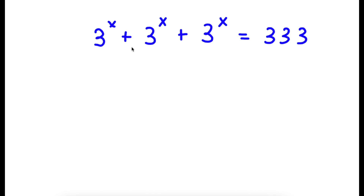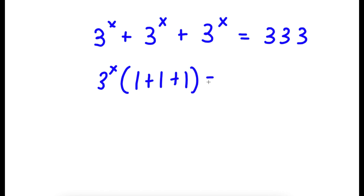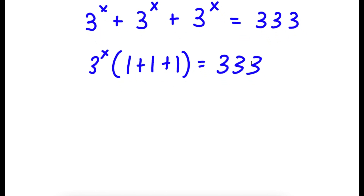So in this problem, I have 3 to the power of x plus 3 to the power of x plus 3 to the power of x is equal to 333. So to solve this, I'm going to first start by factoring out 3 to the power of x. So I have 3 to the power of x times 1 plus 1 plus 1 is equal to 333. Now 1 plus 1 plus 1, that's simply equal to 3. So now I have 3 to the power of x times 3 is equal to 333.